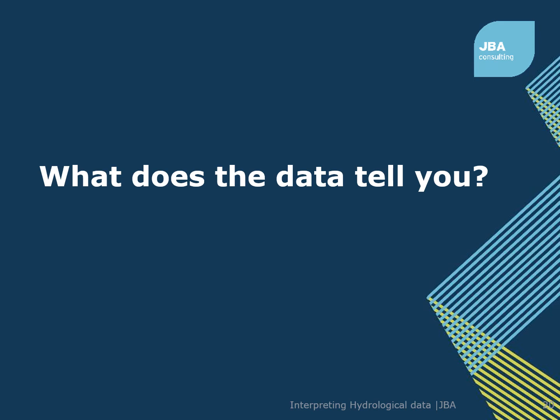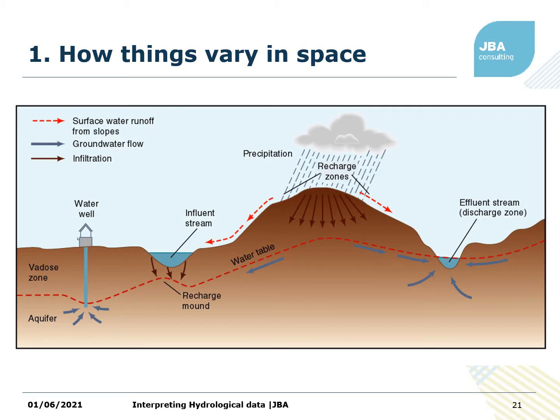Now we've got an overview of environmental flows — what they are and why you might use them. A lot of this comes down to how sensitive is your river and how significant is the action you're thinking about taking. The answer is to look at the data and see what it tells us. The first thing hydrological data might tell you is how things vary in space. Here you've got two watercourses crossing the same aquifer but they won't behave the same way — one intersects the water table so the river will be gaining water from groundwater; the other sits above the water table so water flows out of the river into the groundwater. Note that the terms 'influent' and 'effluent' need to be used carefully depending on your perspective.